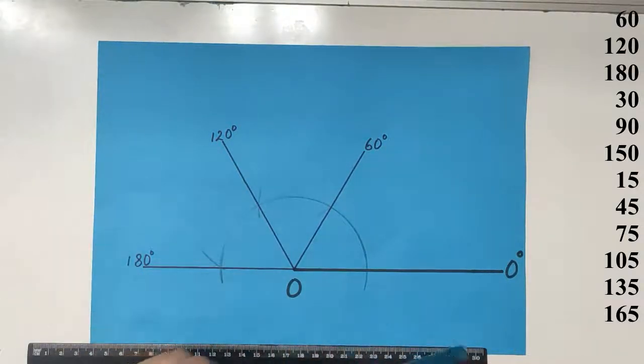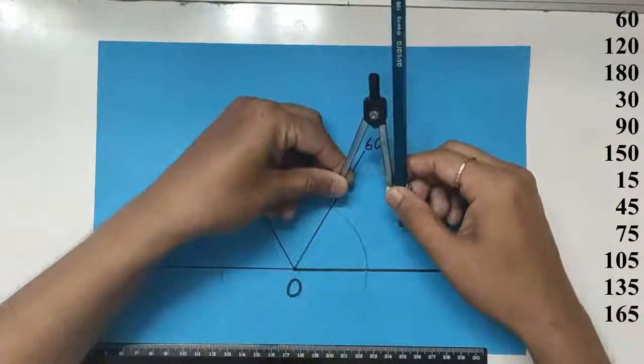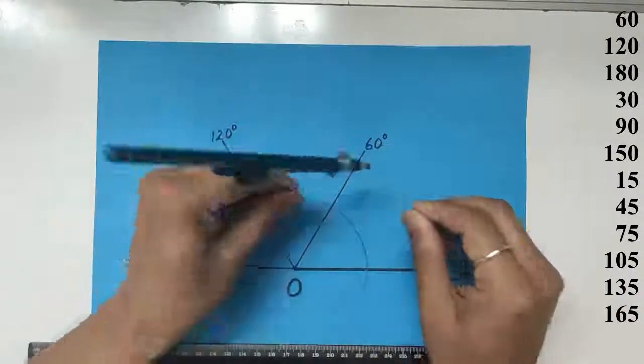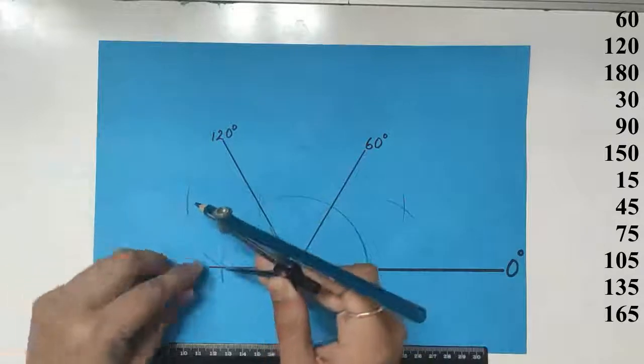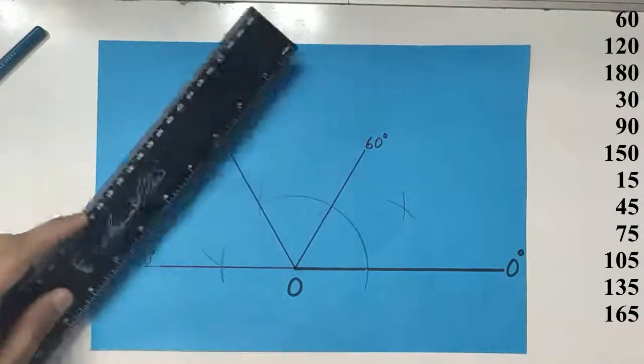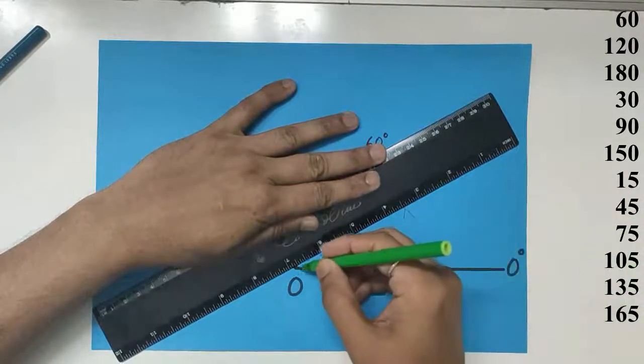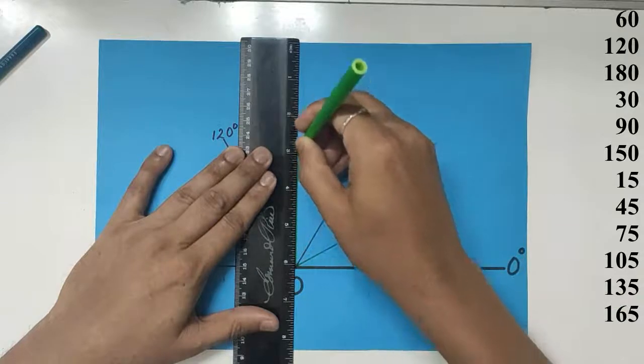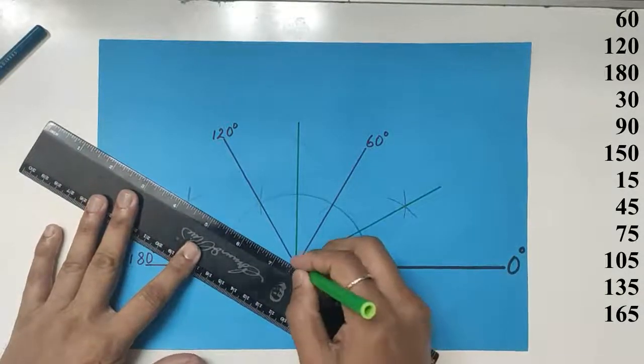To draw the 30 degrees, we bisect 60 degrees. We cut off two arcs. We cut off two arcs between 60 and 120 to get 90, and we cut off two arcs between 120 and 180 to get 150 degrees. We join these two points where the arcs meet to the center. That's 30 degrees, straight up, that's 90 degrees.